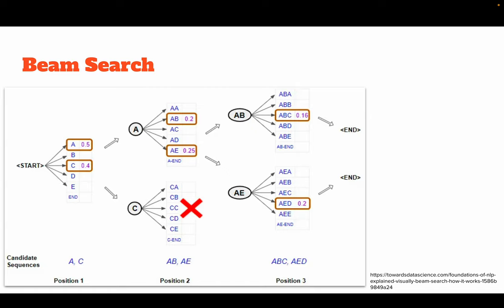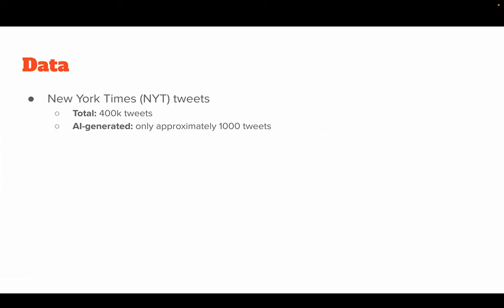In this example with beam width 2, we select 'a' and 'c' with probabilities 0.5 and 0.4. For 'a' we have 'ab' and 'ae'; for 'c' there is nothing. From 'ab' we get two possibilities, and 'aed' is the one with the highest joint probability. This is one way language tokens are generated.